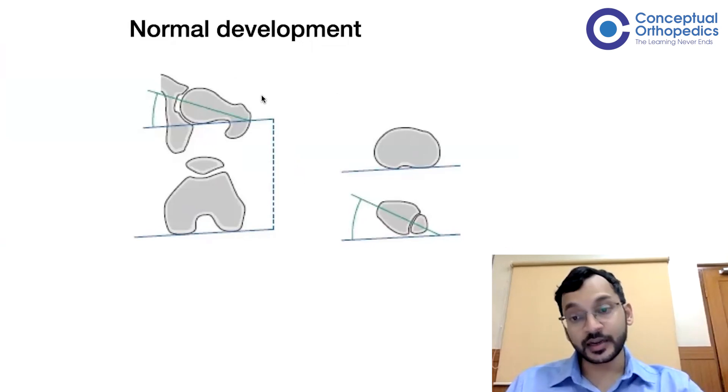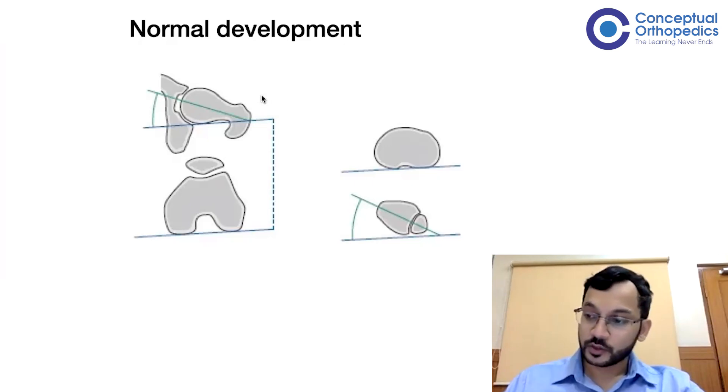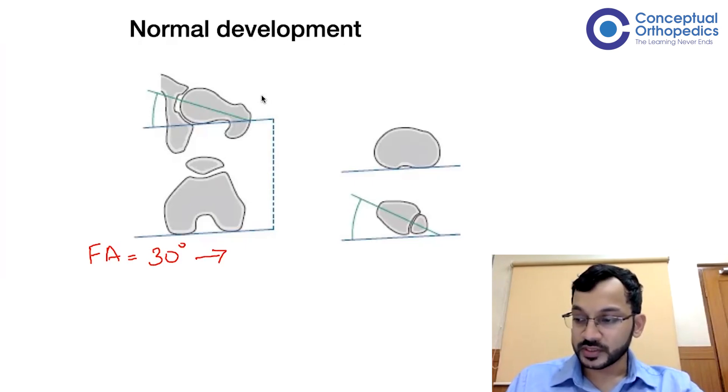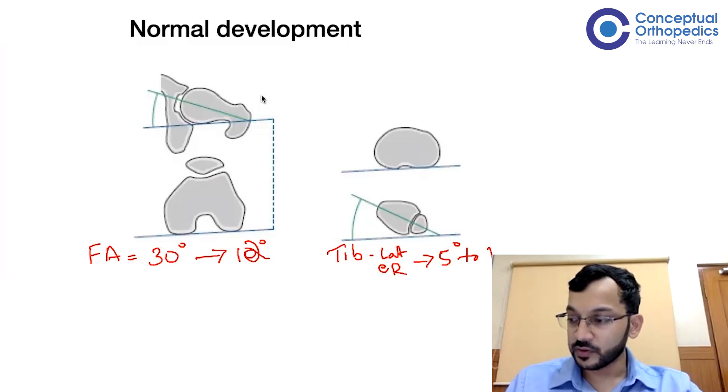Internal tibial torsion decreases, that means the foot rotates laterally in comparison to the knee joint. So that also increases to about 15 degrees by maturity. If I am supposed to show it, this particular angle, the first one is the femoral anteversion. This increases from 30 degrees to about 10 to 12 degrees, whereas the tibial rotation, the tibia rotates laterally or externally. External rotation increases from 5 degrees to 15 degrees.